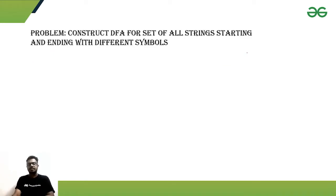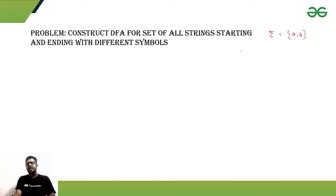First, let's define our alphabet. Our alphabet set has two symbols only: 'a' and 'b'. Starting and ending with different symbols means our smallest valid strings will be 'ab' or 'ba', and after that anything — for example, 'ab', 'ba', 'aab', 'bba' — anything starting and ending with different symbols.